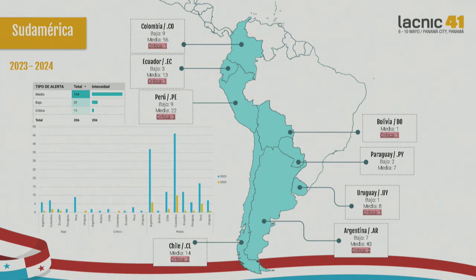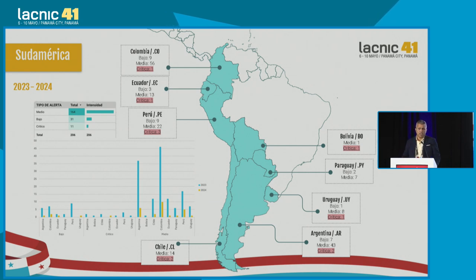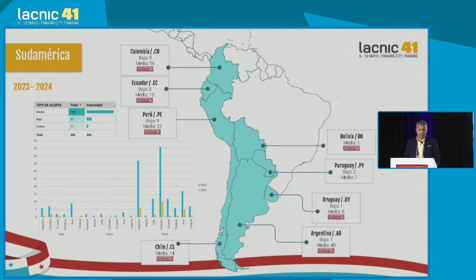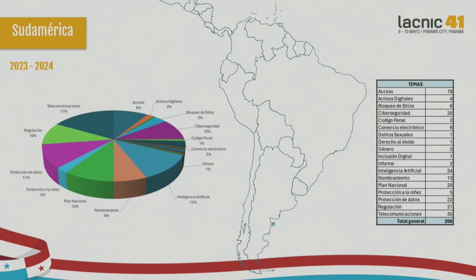The countries with more activity include Colombia, with a great number of initiatives especially on telecommunications — they went through a process where they would bid 5G bands — and Peru, which also has many initiatives related to the internet. For the critical initiatives, we identified some in Colombia, Ecuador, Peru, Bolivia, Uruguay, Argentina, and Chile. The tendency shows higher incidence on data protection, artificial intelligence, and cybersecurity, with other themes in telecommunications as well.